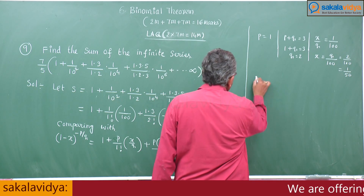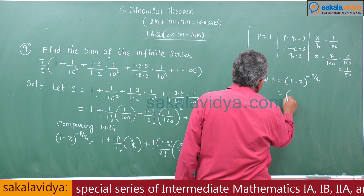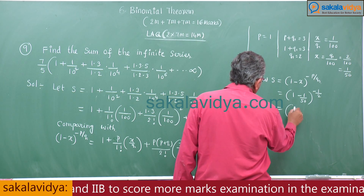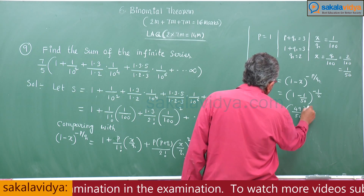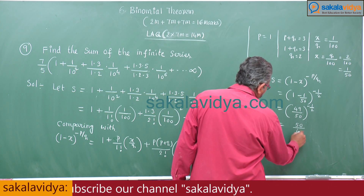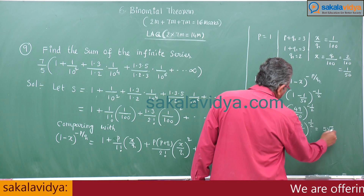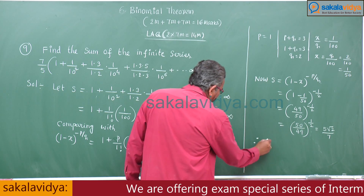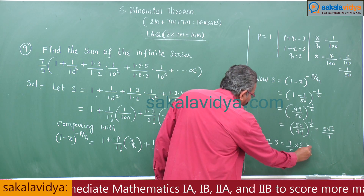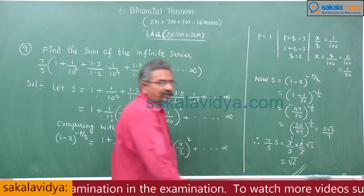So S becomes (1 − x)^(−p/q) = (1 − 1/50)^(−1/2) = (49/50)^(−1/2) = (50/49)^(1/2) = 5√2 / 7. But what we require is 7/5 times S: (7/5)·(5√2/7) = √2. Hence the required sum is √2.